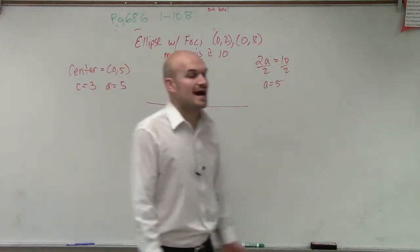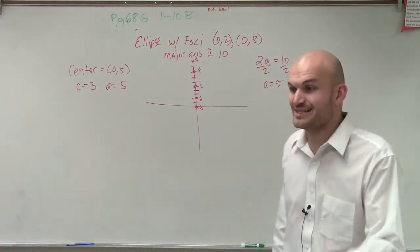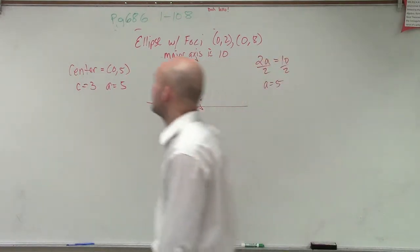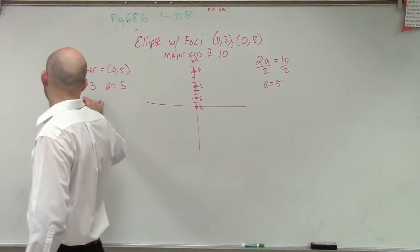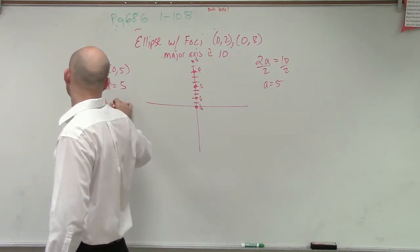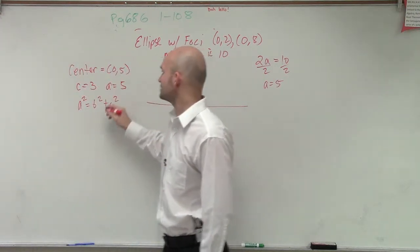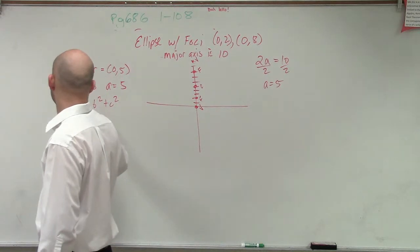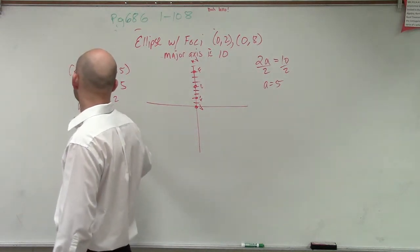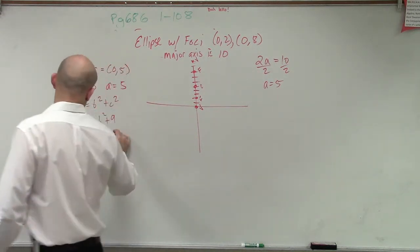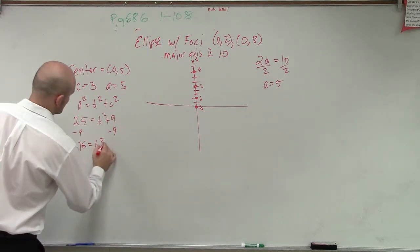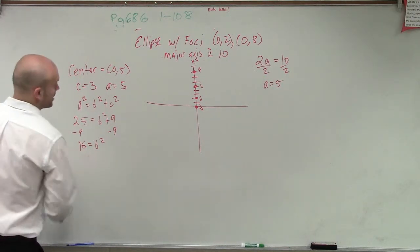So now the last thing we need to do to write the equation, we just need to figure out b. So we go back to how does a, b, and c relate to each other? a squared equals b squared plus c squared. a squared is 25. b squared we don't know. c squared is 9. Minus 9, minus 9, 16 equals b squared. That's all we need to figure out.